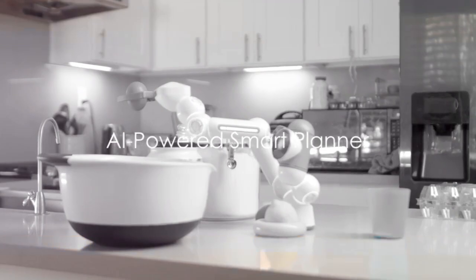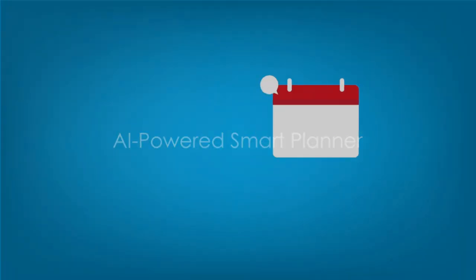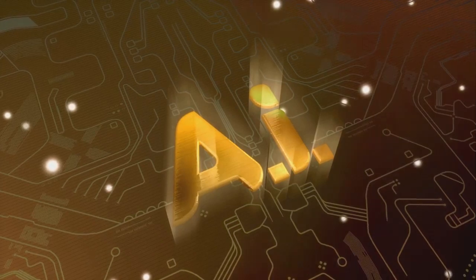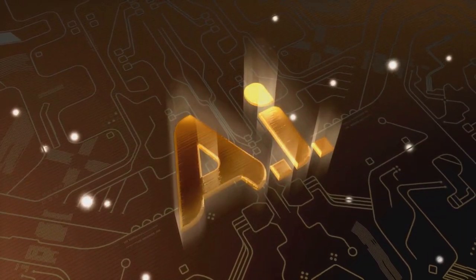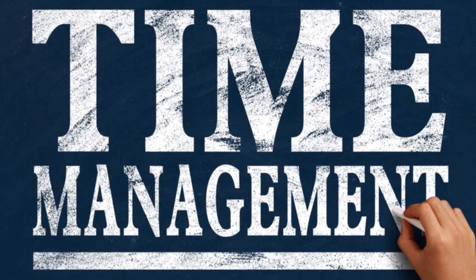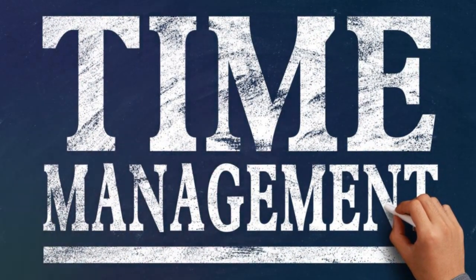Up next at number 4, we have an AI gadget that will undoubtedly make your academic life a breeze. It's a smart planner that uses artificial intelligence to help you manage your academic tasks. With its unique features, it can analyze your schedule, prioritize tasks, and suggest the most efficient ways to manage your time.